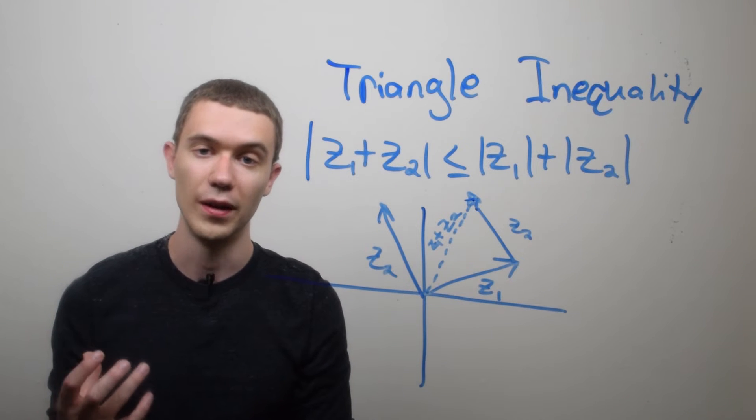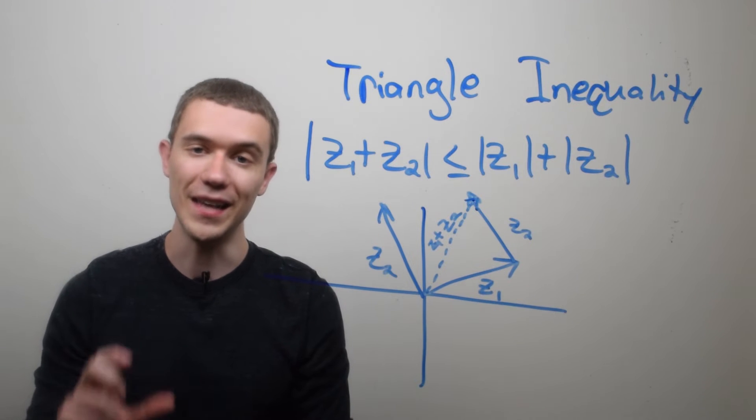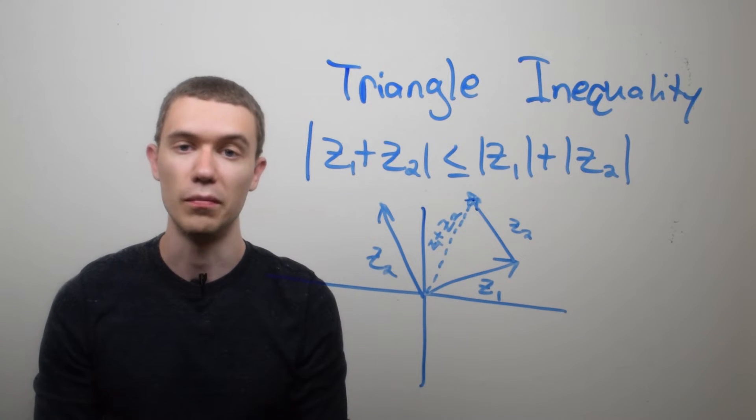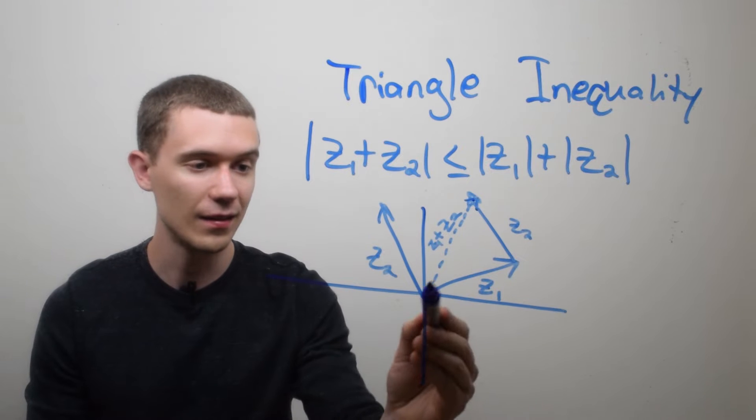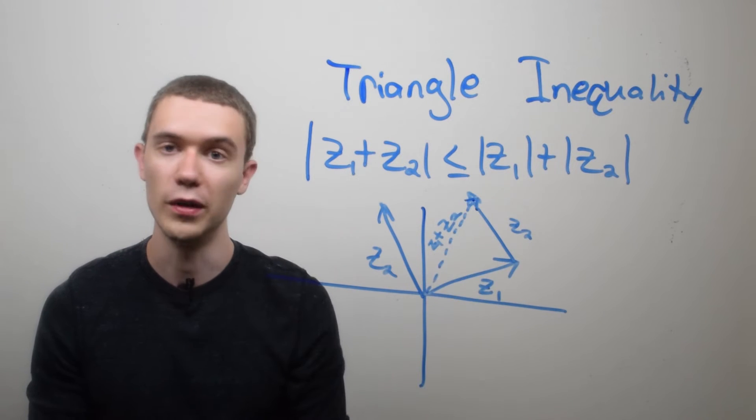where I end up connecting that to the origin represents the sum, z1 plus z2. And what the triangle inequality says is that the length or the modulus of this sum has to be less than the length of the sum of the two individual vectors.